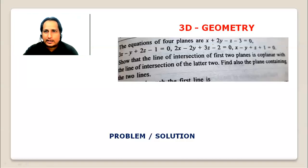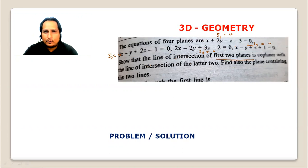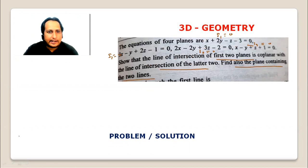The equations of four planes are: x plus 2y minus z minus 3 equals 0; 3x minus y plus 2z minus 1 equals 0. Let these be s1 equals 0, s2 equals 0, s3 equals 0, and s4 equals 0. Show that the line of intersection of the first two planes is coplanar with the line of intersection of the later two planes. Also find the equation of the plane containing them.